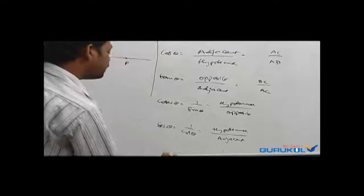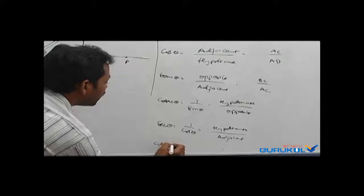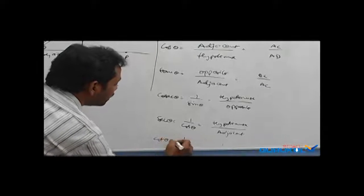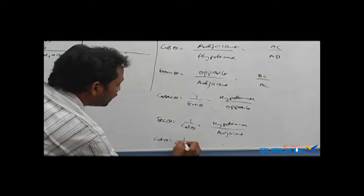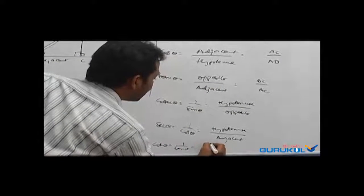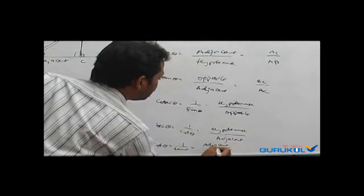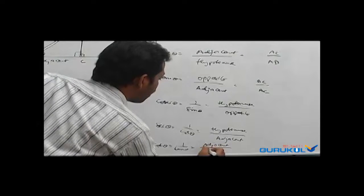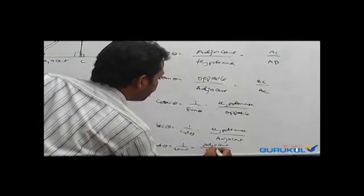Next is cot theta. Cot theta is the reciprocal of tan theta. Since tan theta is opposite by adjacent, cot theta gives you adjacent by opposite.